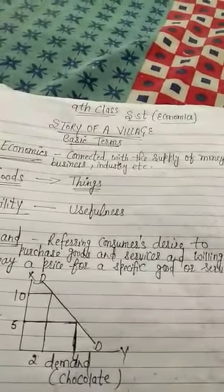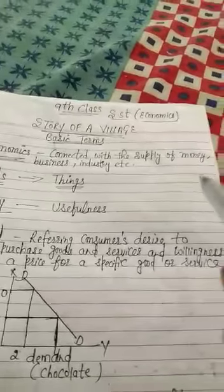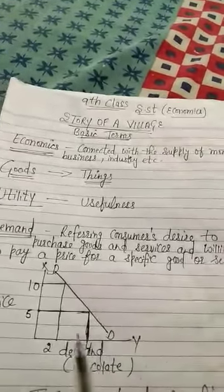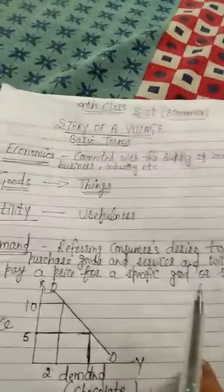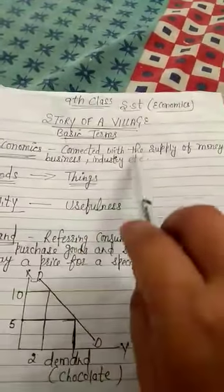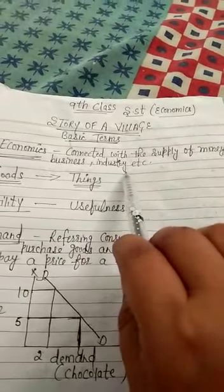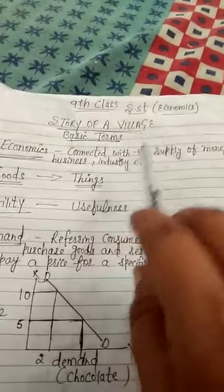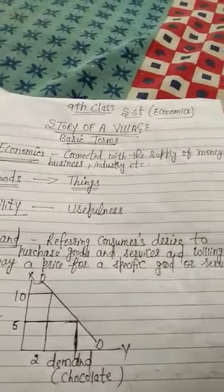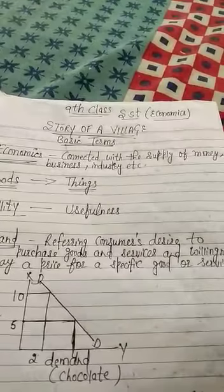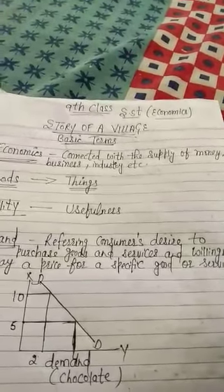Instead we will read about economics activity such as production, distribution and consumption. First of all we read about what is economics connected with the supply of money, business and industry. In other words, Economics is a study of unlimited human wants and the activities carried out to satisfy this one through limited means.